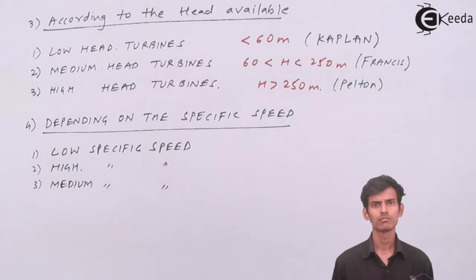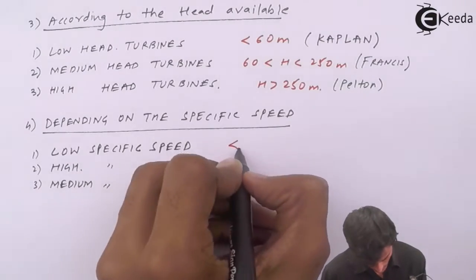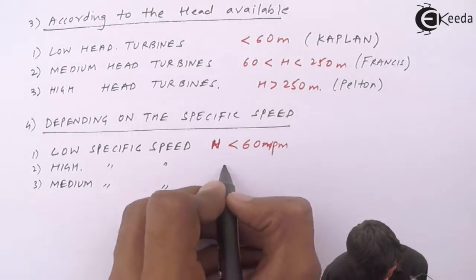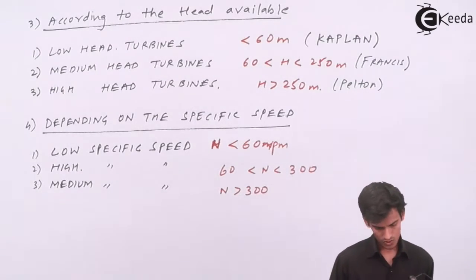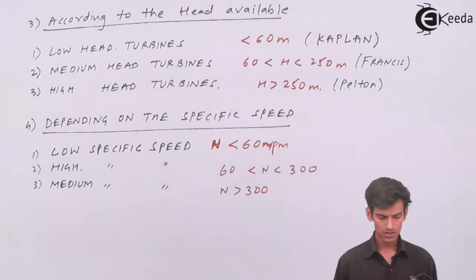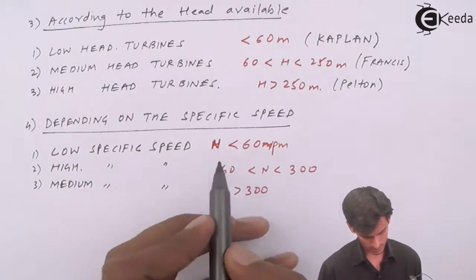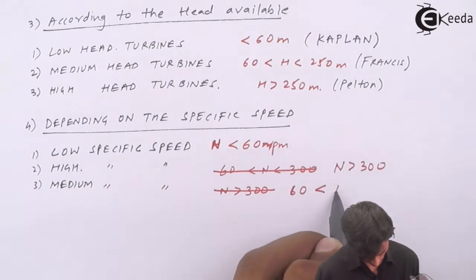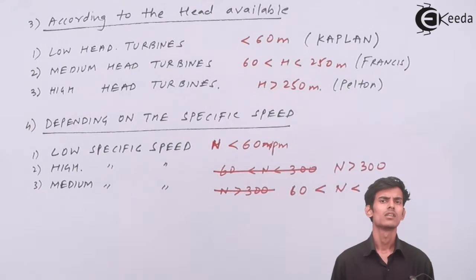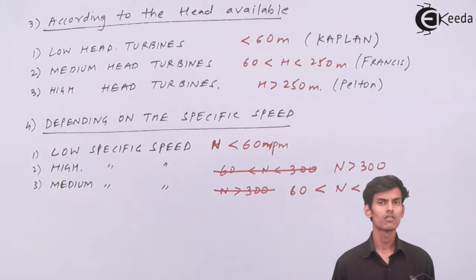There are three categories: low specific speed, medium specific speed, and high specific speed. Turbines with specific speed less than 60 are low specific speed. Those with specific speed more than 300 are high specific speed. Medium specific speed turbines fall between 60 and 300. The Pelton wheel comes under low specific speed, Francis turbine under medium specific speed, and Kaplan turbine under high specific speed.